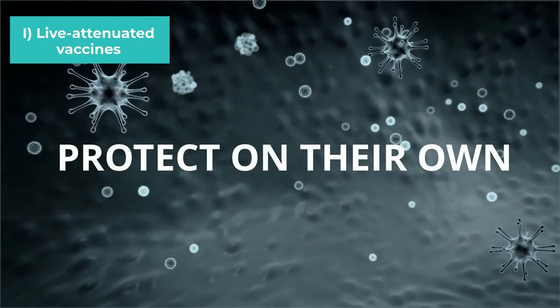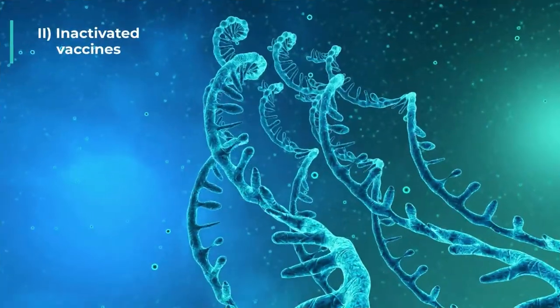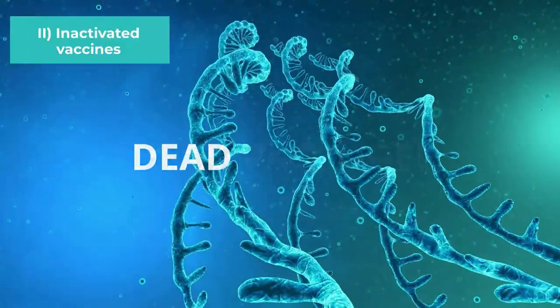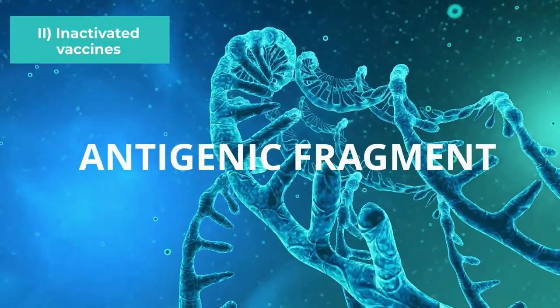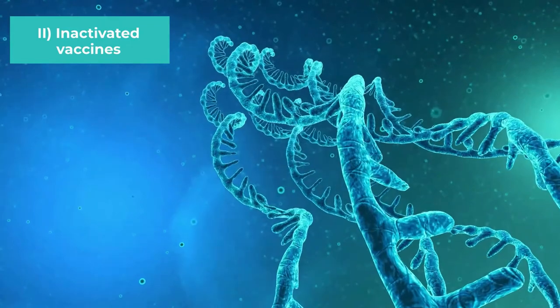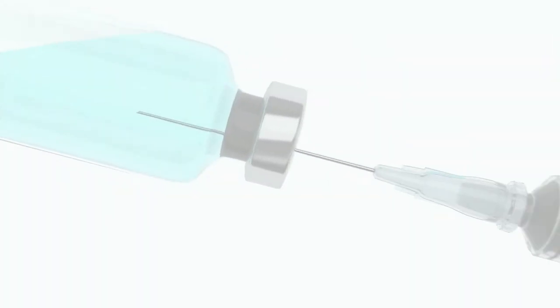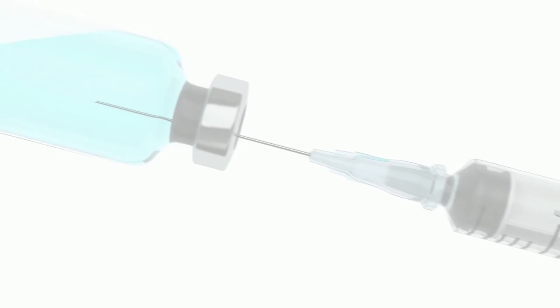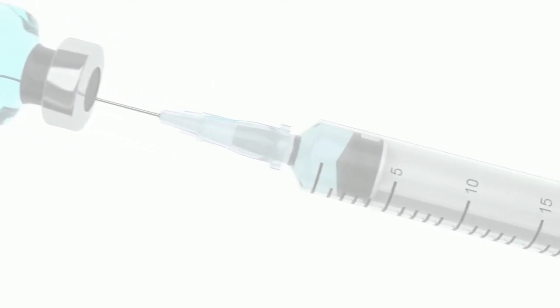Vaccines can also be made from a dead pathogen or antigenic fragments, such as those currently used in COVID vaccines. They are called inactivated vaccines and are those that require the addition of additives and excipients.